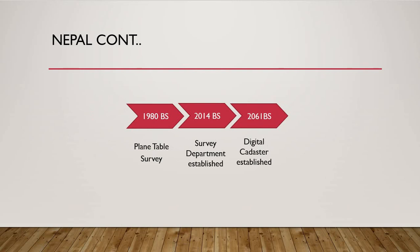After the end of World War I in 1975 PS, the Nepal Army returned with advanced knowledge of surveying and started Kampas Surveys, establishing a Kampas School. In 1980 PS, Plaintable Survey was done for the first time in Bhaktapur, and the Survey Department was established in 2014 PS.